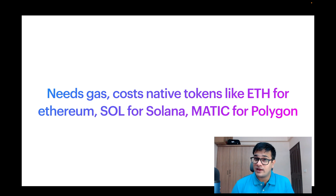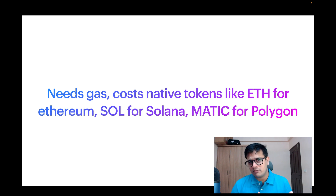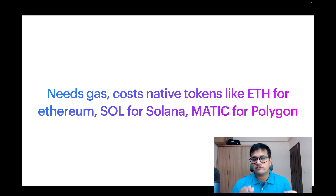Because transactions change the state, they need gas. The gas is paid in native tokens — like ETH for Ethereum, SOL for Solana, MATIC for Polygon, BNB for BNB Chain, AVAX for Avalanche, and so on.